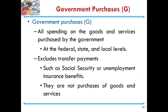The third component is government purchases, which represents all spending on goods and services purchased by the government, whether at the federal, state, or local level. In defining government purchases, we exclude transfer payments — payments such as social security or unemployment insurance benefits — because they are not purchases of goods and services.